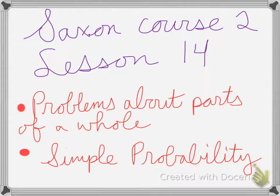Saxon Course 2, Lesson 14 is about problems with parts of a whole and simple probability. Here, one-third of students attend a game. What fraction of students do not attend the game?